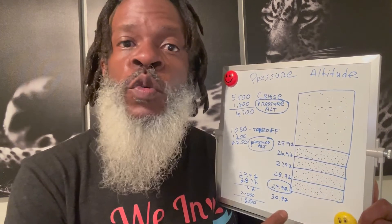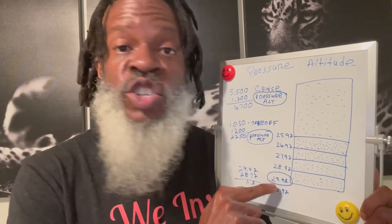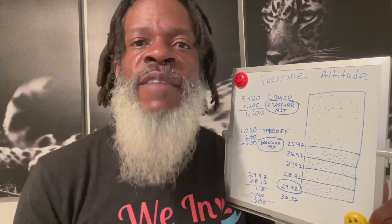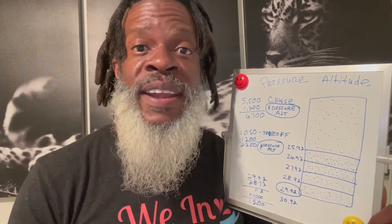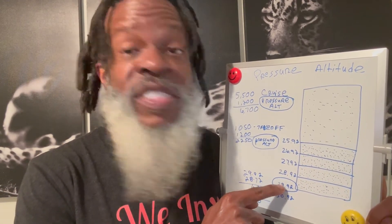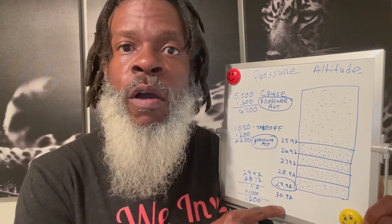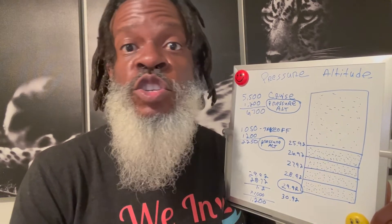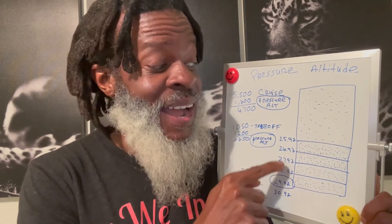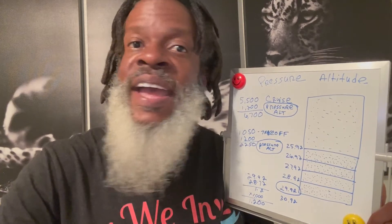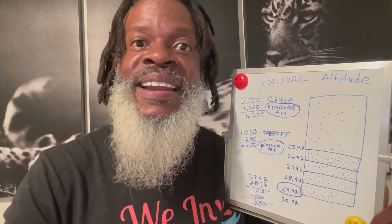A fun game you can play is that every time you're given an altimeter setting, immediately start thinking: does this plane think that I'm higher or lower versus where I actually am? You can do that by understanding the scale we just reviewed. Standard pressure is 29.92 — that number is drilled into your head. So if the altimeter setting is 30.52, in relation to 29.92 you know the plane thinks it's lower than where you actually are. If the setting is 28.52, you understand the plane thinks it's higher than where you actually are. Think about where the altimeter setting is in relation to standard pressure every time you're given a number.